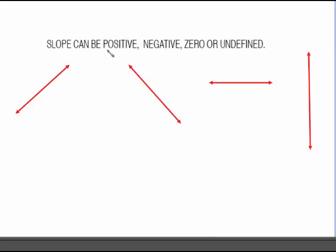Slope can be either positive. That's a positive slope going up from left to right. Negative. This is going down from left to right. Or it can be zero, which is your horizontal. Or it can be undefined, which is your vertical line.